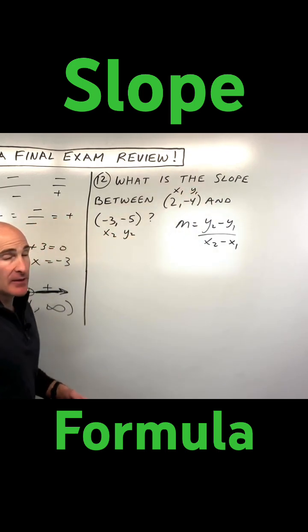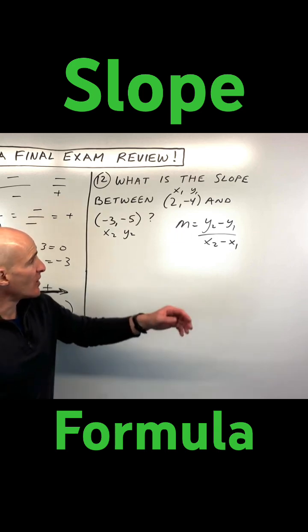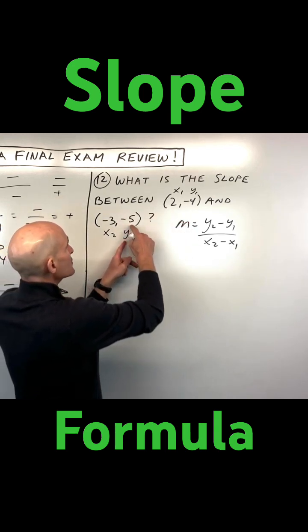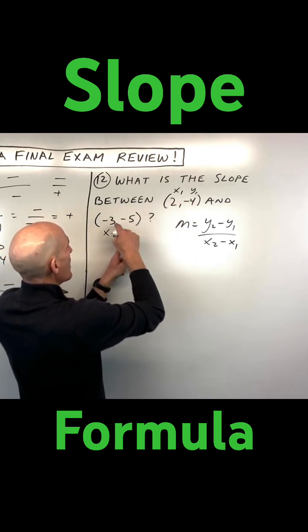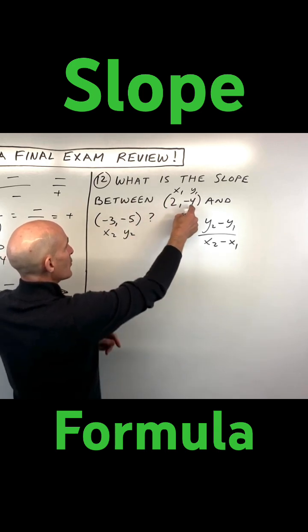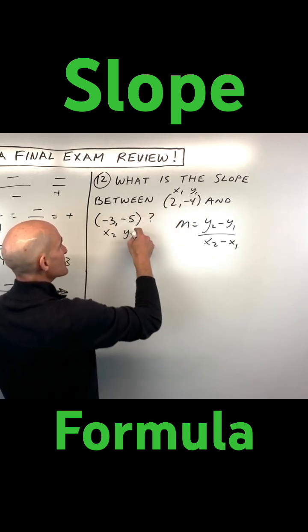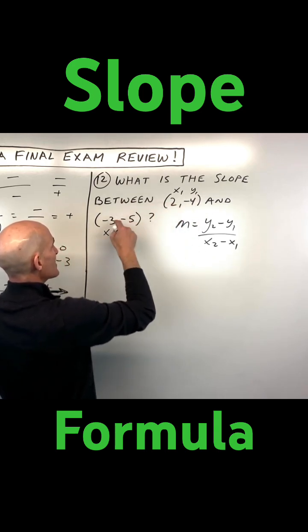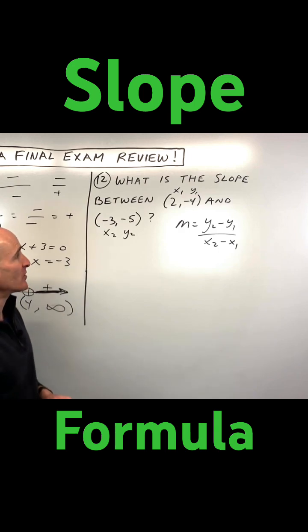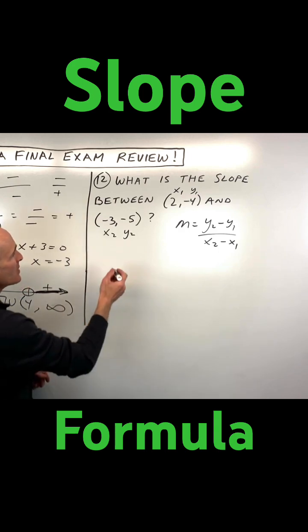The key thing is when you're subtracting, you want to keep the order consistent. So if I do this y minus this y, I want to do this x minus this x. If I go this y minus this y, I want to do this x minus this x. You want to stay consistent with the order.